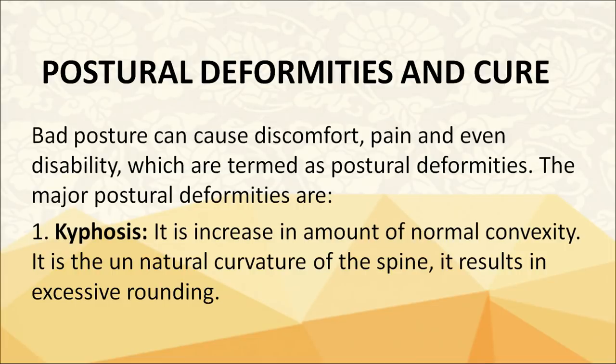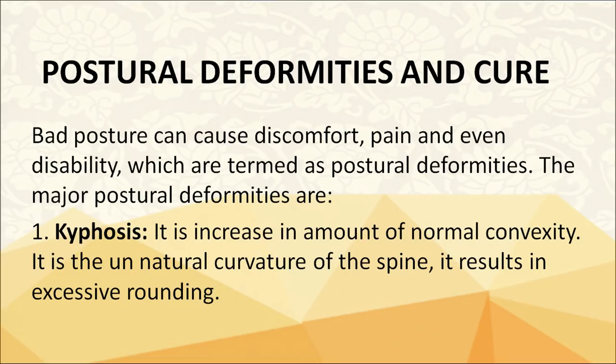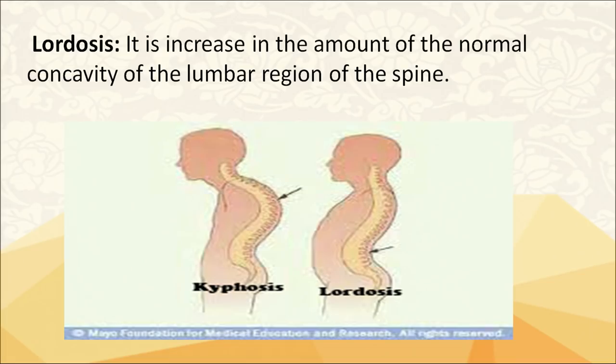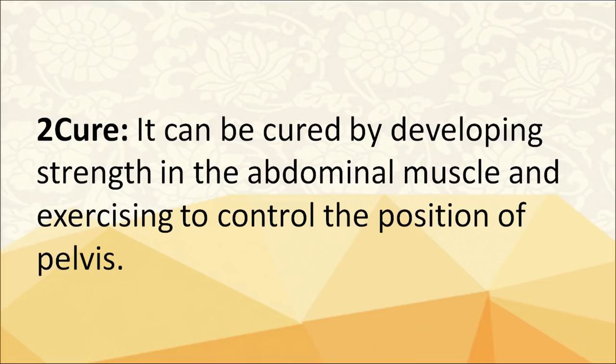Let's discuss postural deformities and their cures. If we don't maintain a good posture, we can face certain postural deformities. Kyphosis is an increased amount of normal convexity — the unnatural curvature of the spine resulting in excessive rounding. It can be cured by strengthening the extensor muscles and improving their tonus. Lordosis increases the amount of normal concavity of the lumbar region of the spine. It can be cured by developing strength in the abdominal muscles and exercising to control the position of the pelvis.